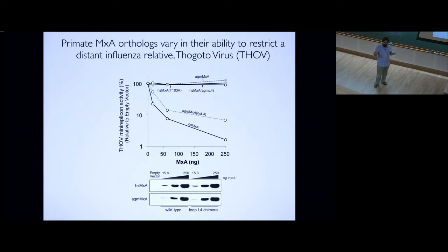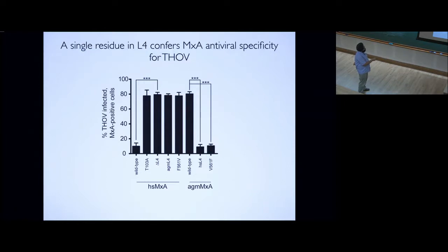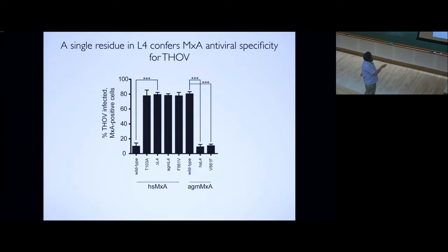Things got even more interesting because one of those amino acids was sufficient to explain all the differences. Wild-type human MXA is very good at restricting Tagoto virus. A single amino acid change from phenylalanine — an aromatic hydrophobic residue — to valine, which exists in African green monkey, basically loses the restriction almost entirely. And African green monkey MXA, which is naturally not very good, if you do the reverse amino acid change at loop L4, basically gains human-like protection.